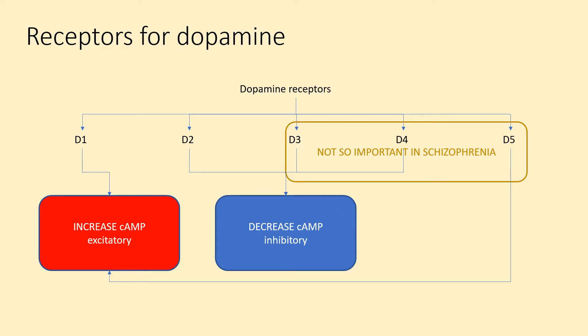Dopamine is a slightly simpler picture because they're all G-protein coupled receptors. There are five of them — D1, D2, D3, D4, and D5 — but you only need to know about two. D1 and D5 are excitatory; D2, D3, and D4 are inhibitory. We don't really need to know about D3, D4, and D5, so let's keep it to D1 and D2.